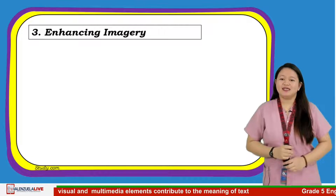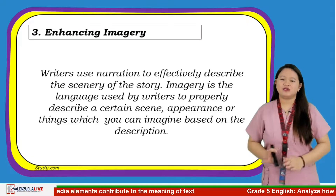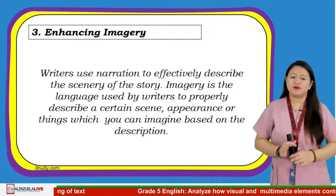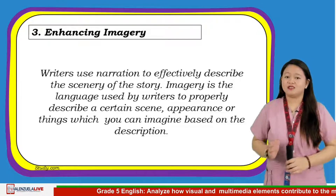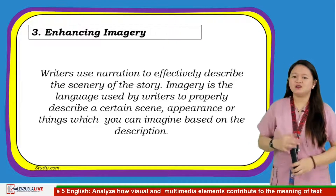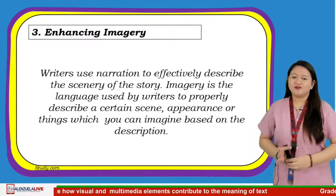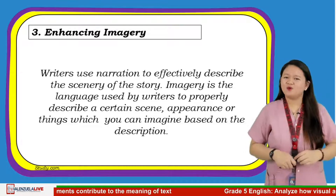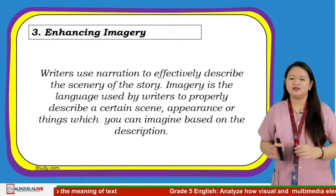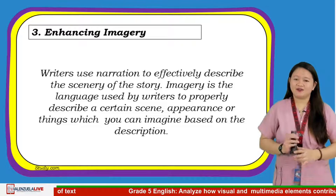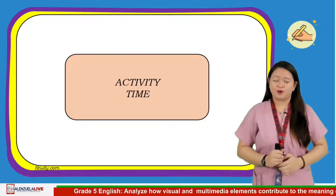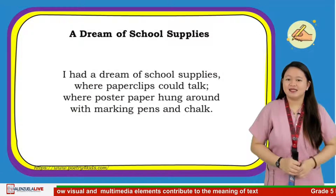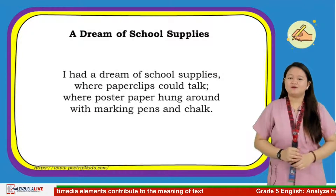The third one is enhancing imagery. Writers use narration to effectively describe the scenery of the story. Imagery is the language used by writers to properly describe a certain scene, appearance, or things which you can imagine based on the description. Visual and multimedia elements are helpful because they let us see or somewhat experience what the author is describing in his or her story. I have here a short poem titled 'A Dream of School Supplies' by Kent Nesbitt. Let us listen and read it, then answer some questions.